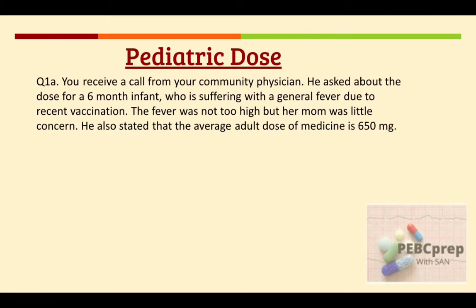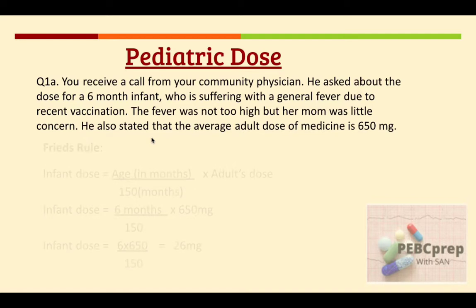In our first question, part A: you receive a call from your community physician asking about the dose for a six-month infant suffering with a general fever due to recent vaccination. The fever was not too high but the mom was a little concerned. The average adult dose of the medicine is 650 milligrams. Since we have the age of six months, we will apply Fried's rule.